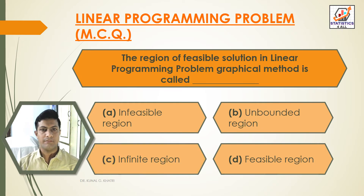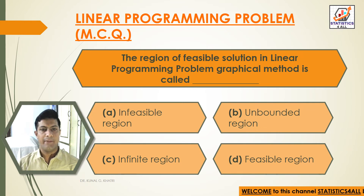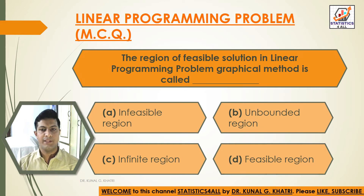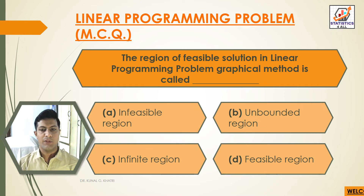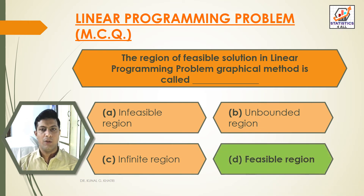Question 10: The region of feasible solution in linear programming problem graphical method is called — Option A: Infeasible region. Option B: Unbounded region. Option C: Infinite region. Option D: Feasible region. Answer: Option D — The region of feasible solution in linear programming problem graphical method is called feasible region.